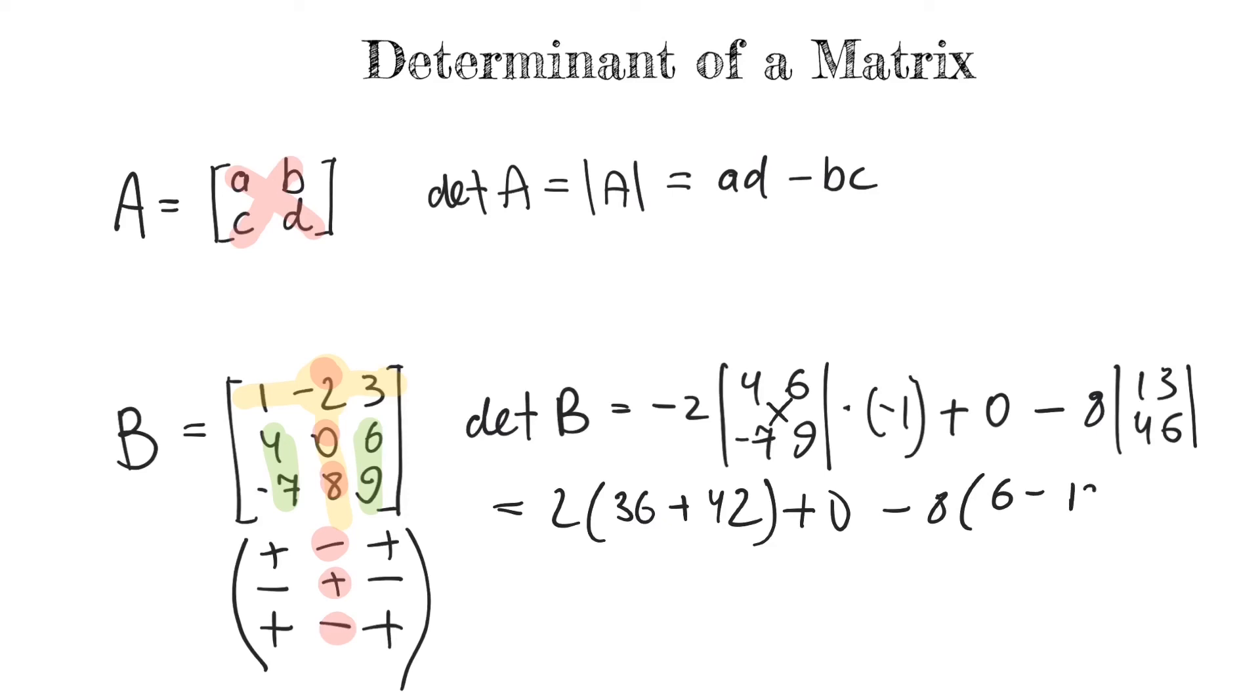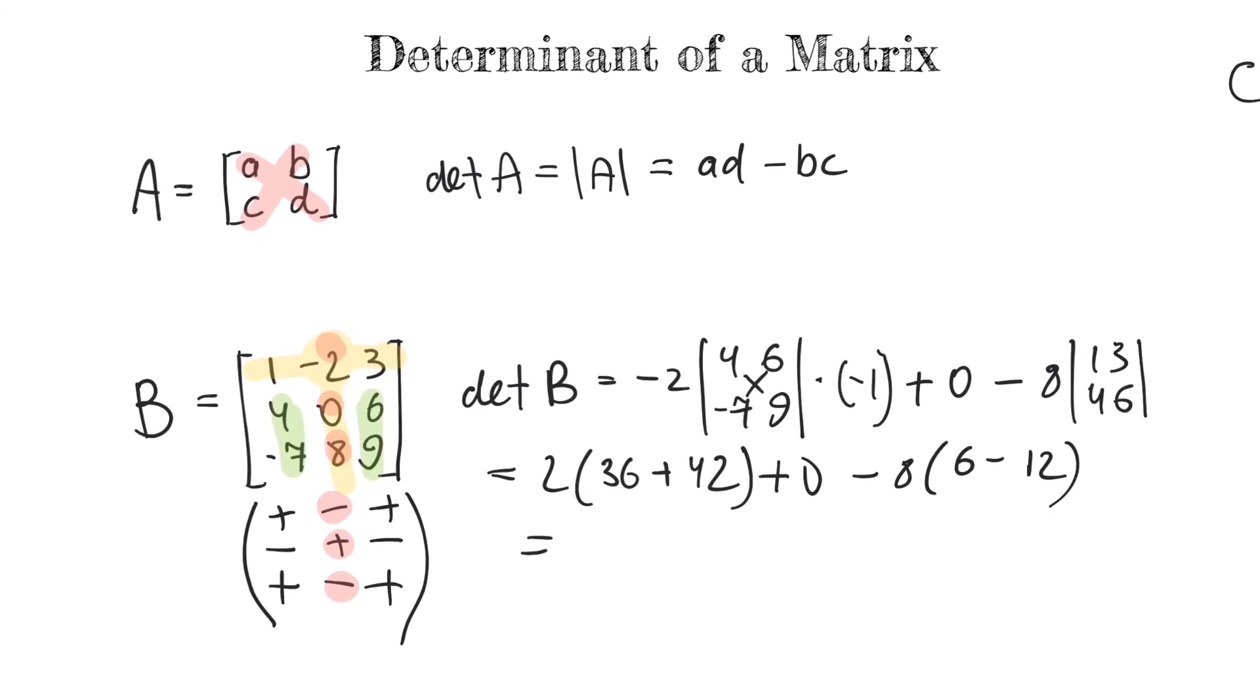So, this gives us 78 times 2 or 156 minus 8 times negative 6.